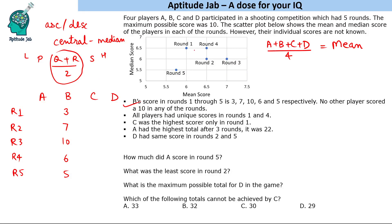Using the mean scores from the graph, we can calculate the total score per round. Round 1: mean = 6, so total = 24. Round 2: mean = 6.5, total = 26. Round 3: mean = 7, total = 28. Round 4: mean = 6.5, total = 26. Round 5: mean = 5.75, total = 23. These are the totals for all four players combined.